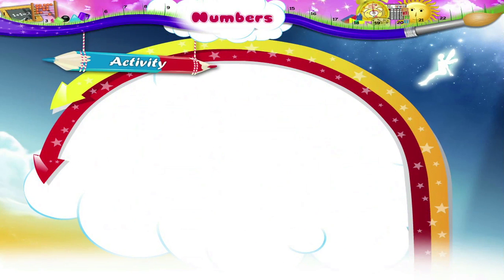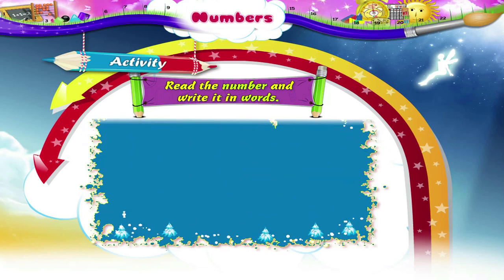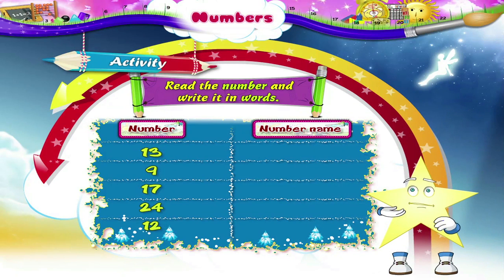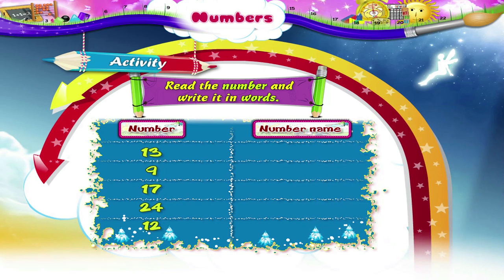Some numbers are given here. We have to read the number and write it in words. Can you read the first number, Starry? Yes, it is 13. 13 is written in words as T-H-I-R-T-E-E-N.